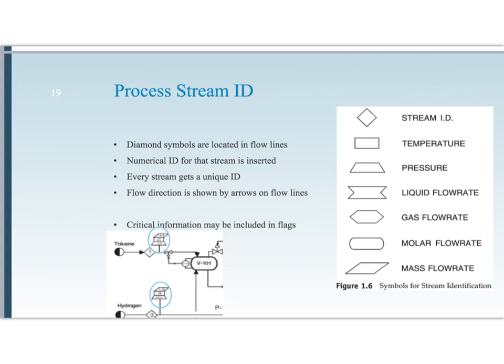For really critical process conditions, we want to identify those on the flow lines in the most compact way possible. A lot of times this is done using flags — each different piece of information has a different shape. A temperature is a rectangle, pressure is a trapezoid, and so forth. You stack them on top of each other for whichever ones you need. So if it's really important that you get the temperature right or the flow rate right, then you indicate those using these flags.